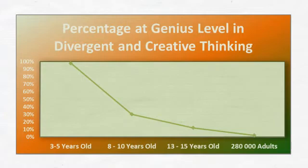The same children were assessed 5 years later. At 13–15 years old, only 12% scored at the genius level. When they assessed 280,000 adults over 25, only 2% scored at the genius level in divergent and creative thinking. Land concluded that non-creative behaviour is learned, and that creative behaviour is unlearned through instrumental teaching and learning, while relational teaching and learning allows and encourages children to think creatively and divergently.